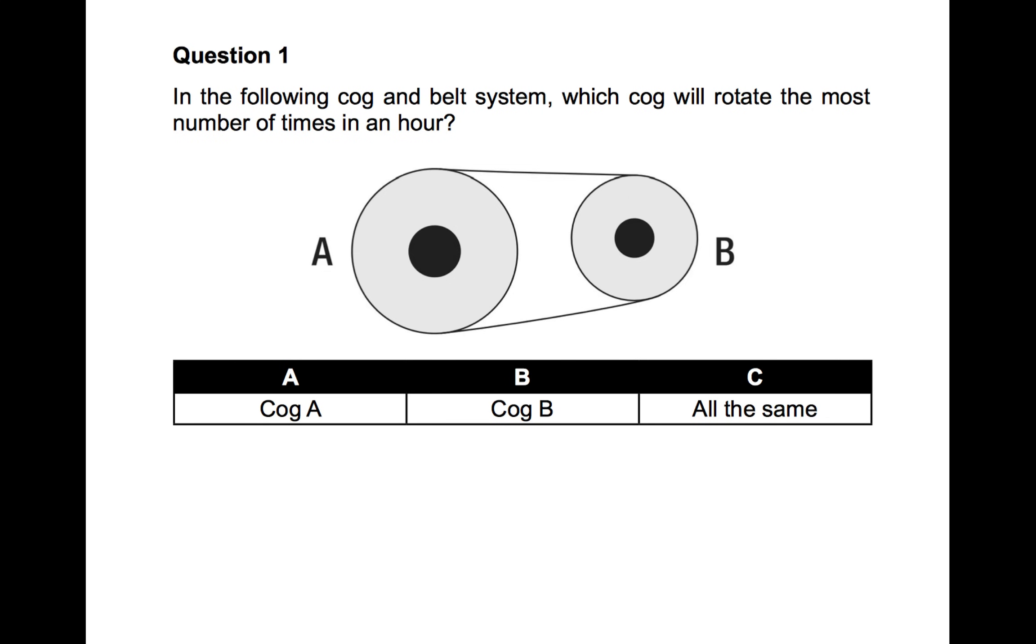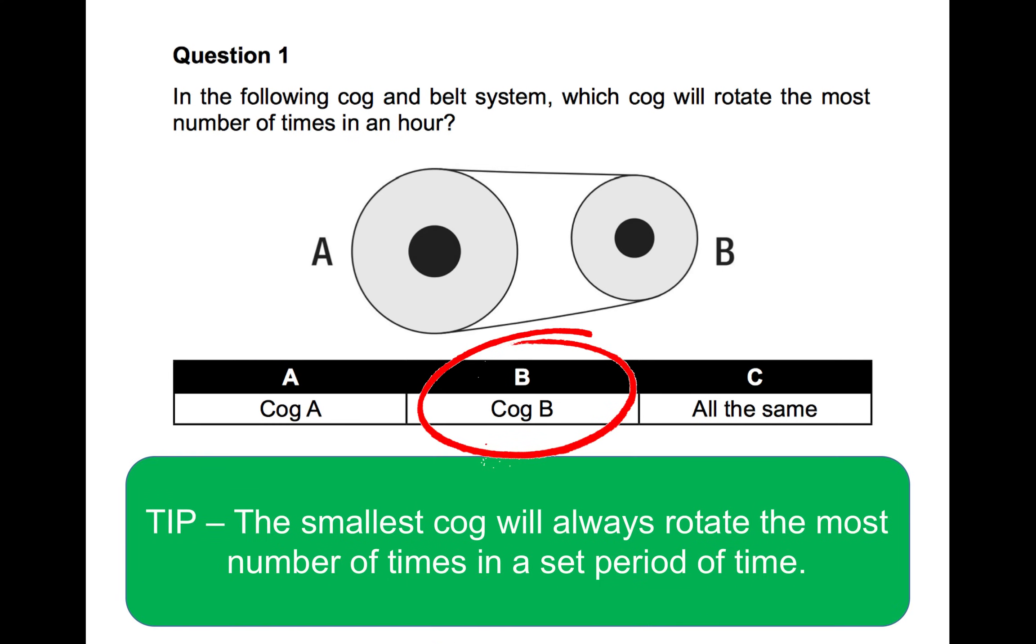So question one, this is a kind of mechanical comprehension test question. In the following cog and belt system, which cog will rotate the most number of times in an hour? Now, it doesn't matter whether it's one hour, two hours, three hours. The question is basically which one will rotate the most, which one will go round the most times in an hour. And the answer is cog B. And the reason for that is the smallest cog will always rotate the most number of times. So it's a really important tip. Take a note of that. In a cog type system, the smallest cog is always going to rotate the most number of times in a set period of time. So it's cog B.